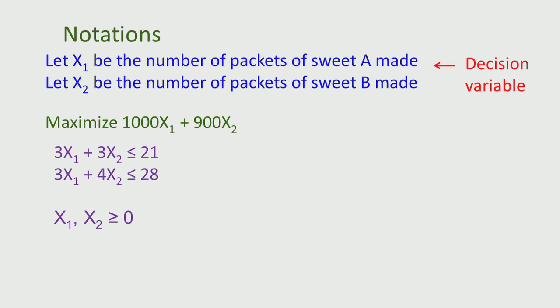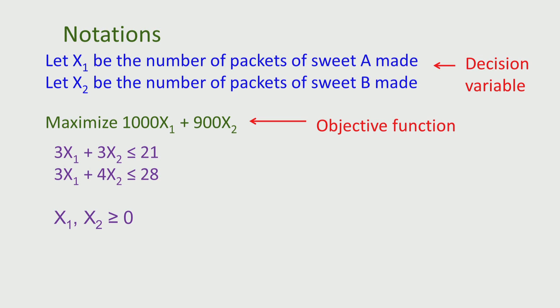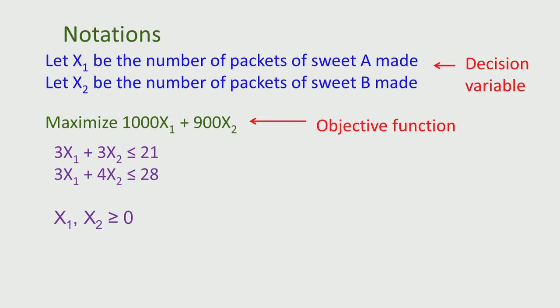We then wrote the revenue function in terms of the decision variables as 1000 X1 plus 900 X2, if X1 packets of sweet A are made and X2 packets of sweet B are made. This function is called the objective function and represents the objective of the problem, which is to generate and maximize revenue. Therefore, maximize 1000 X1 plus 900 X2 is the objective function associated with the problem.